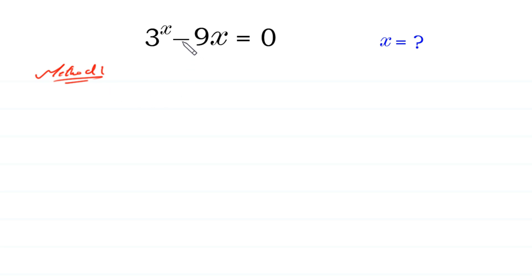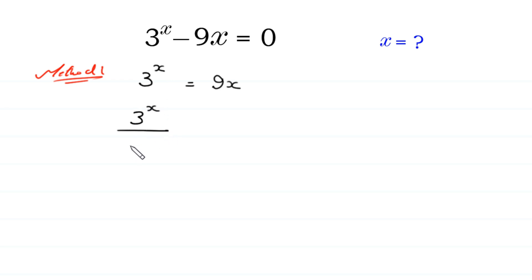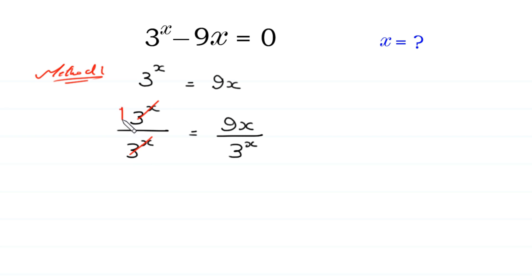In Method 1, we move the negative 9x to the right side: 3 to the power x is equal to 9x. Now from here we divide both sides by 3 to the power x. So 3^x divided by 3^x equals 9x divided by 3^x. The 3^x cancels on the left, leaving 1 equals 9x divided by 3^x.